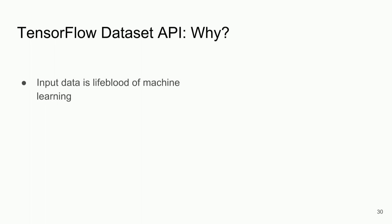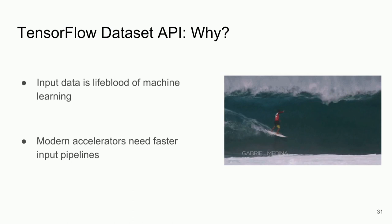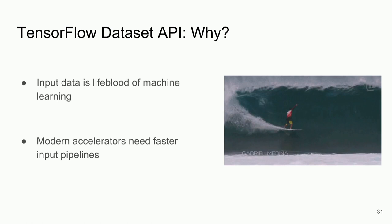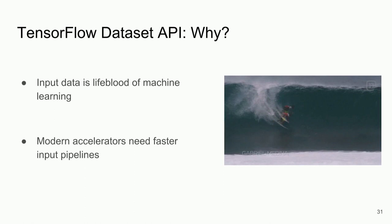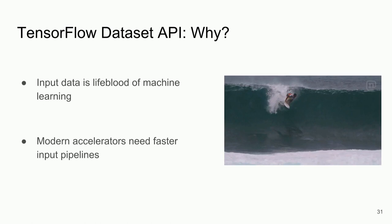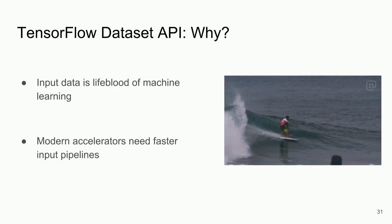Input data is the lifeblood of machine learning — it's what allows our models to have informed ways of solving problems. Modern accelerators need faster input pipelines. Thinking about NVIDIA's Volta or cloud TPUs, if we have a limiting reactant — the rate at which data can get to our models, or data not fitting in memory — we need different alternatives. The data is the surfer in this visual.